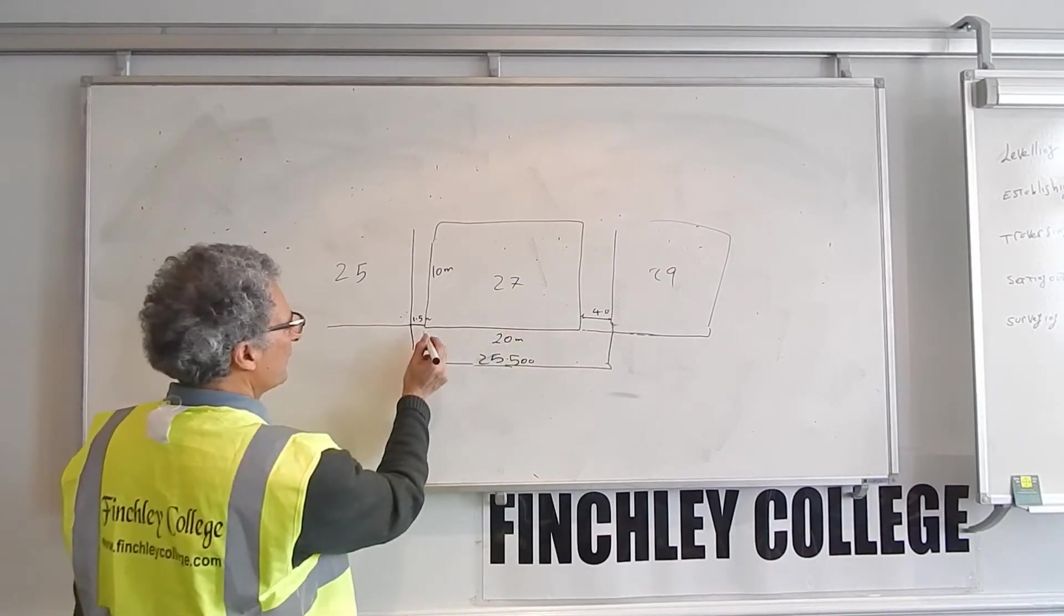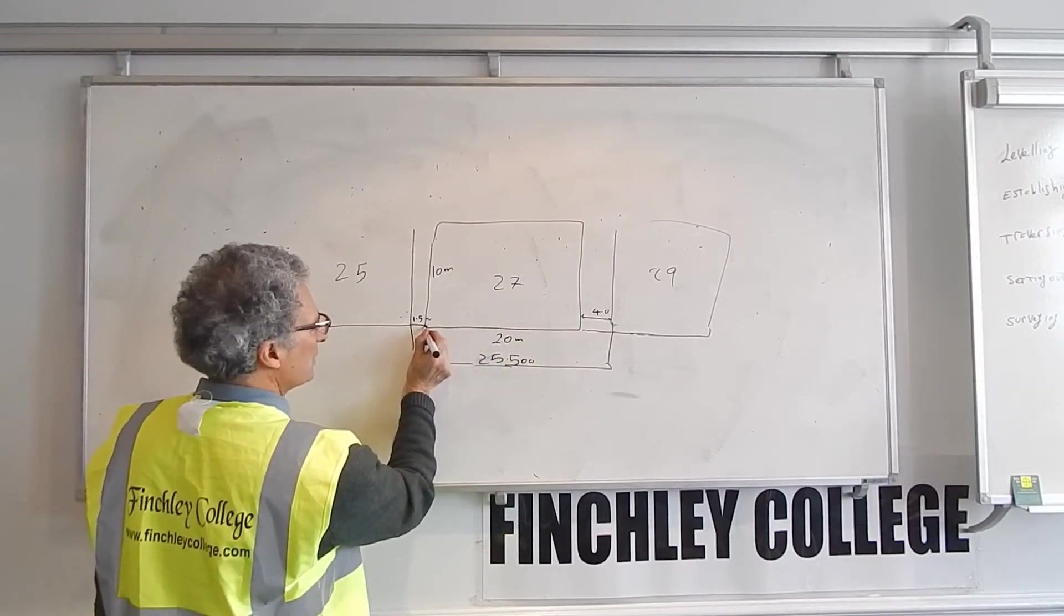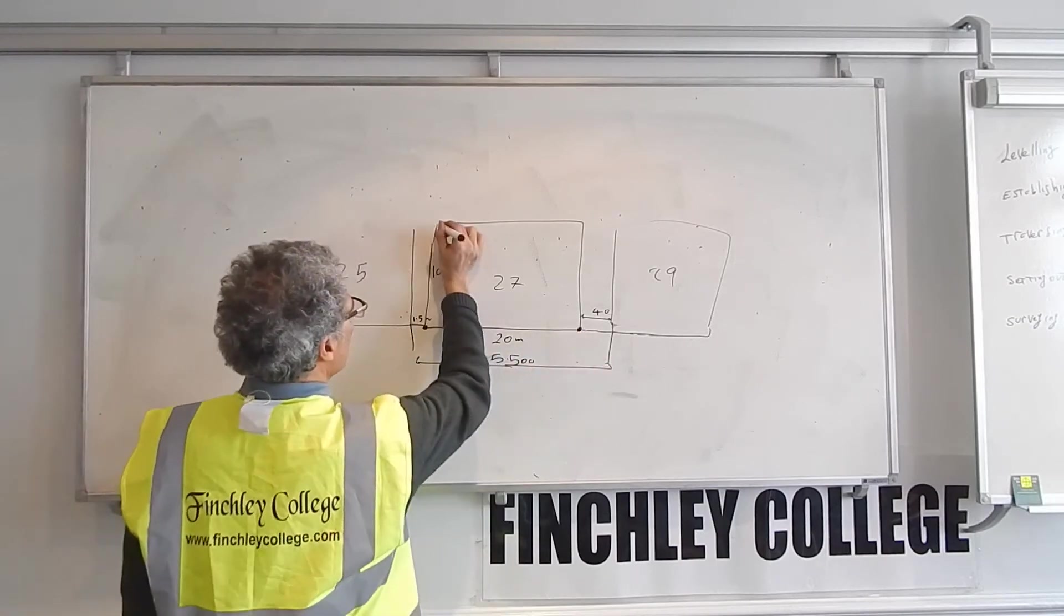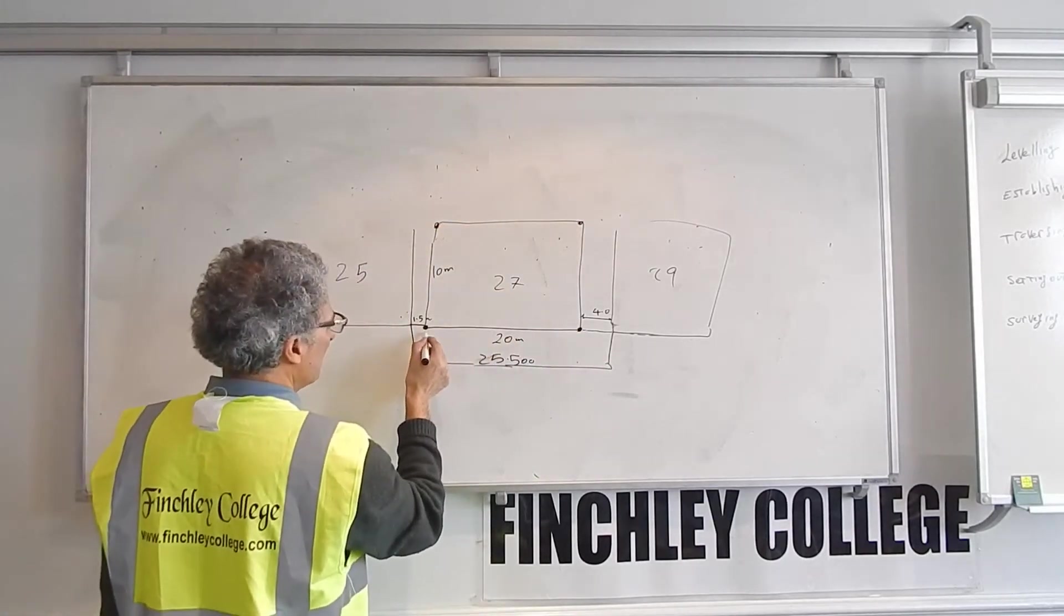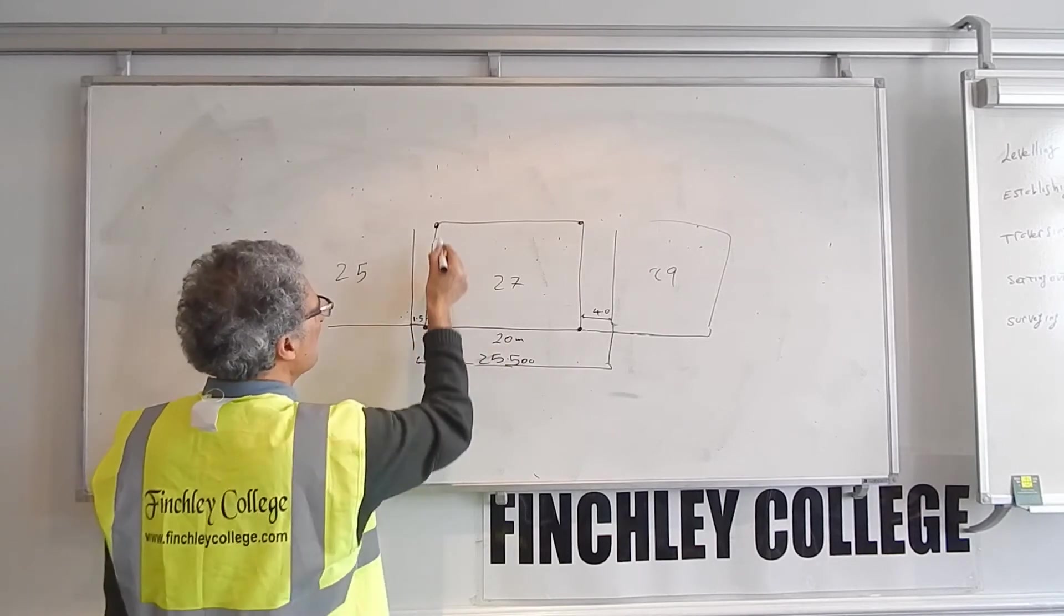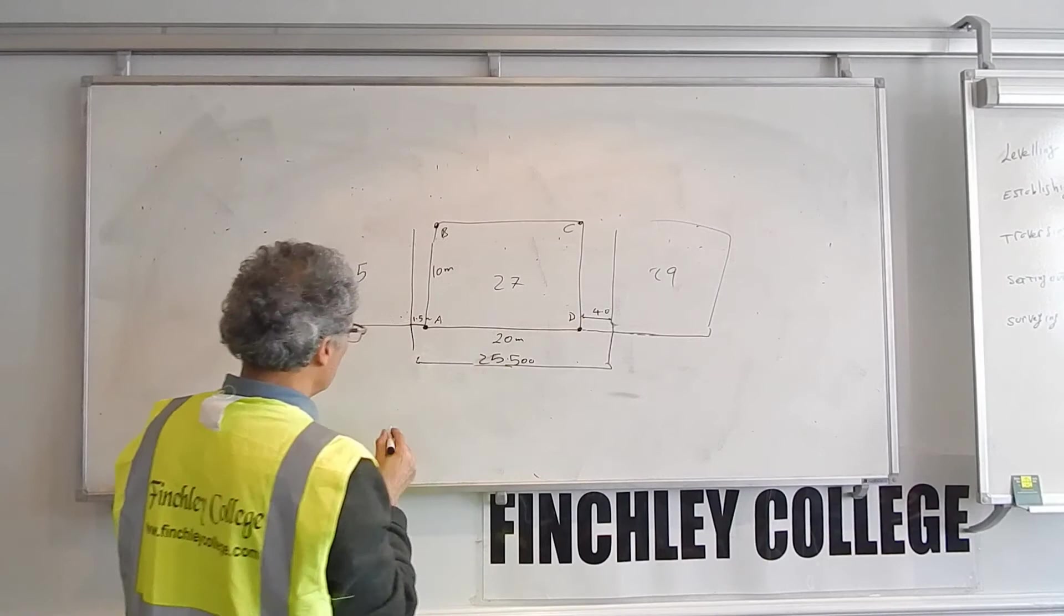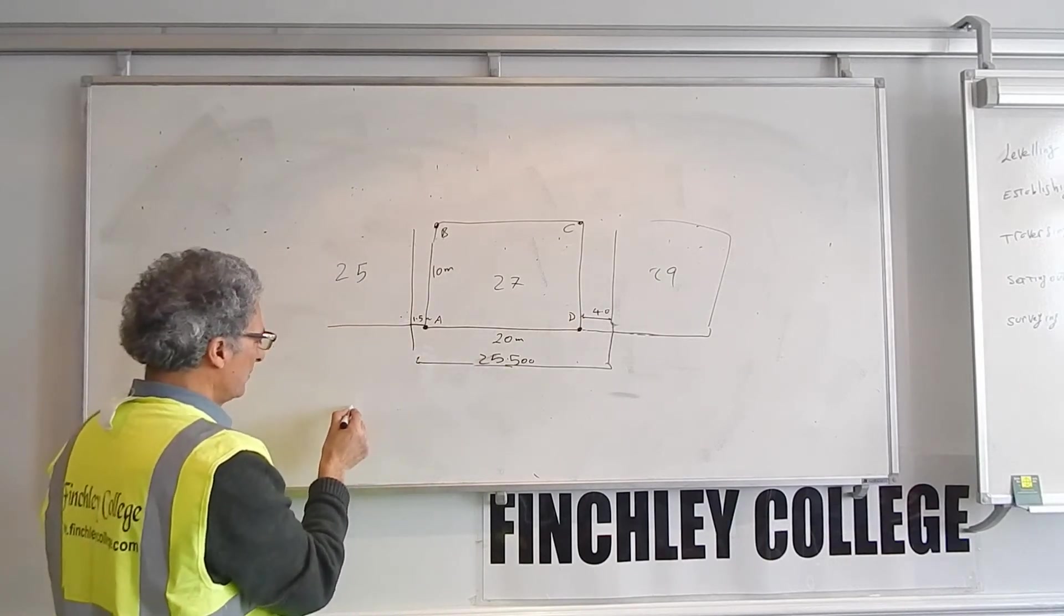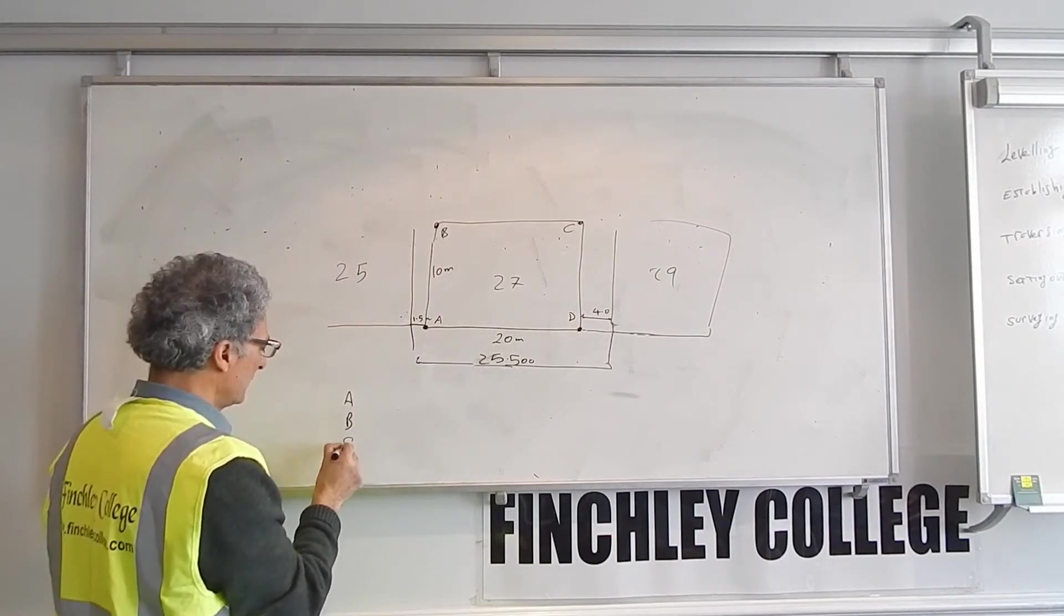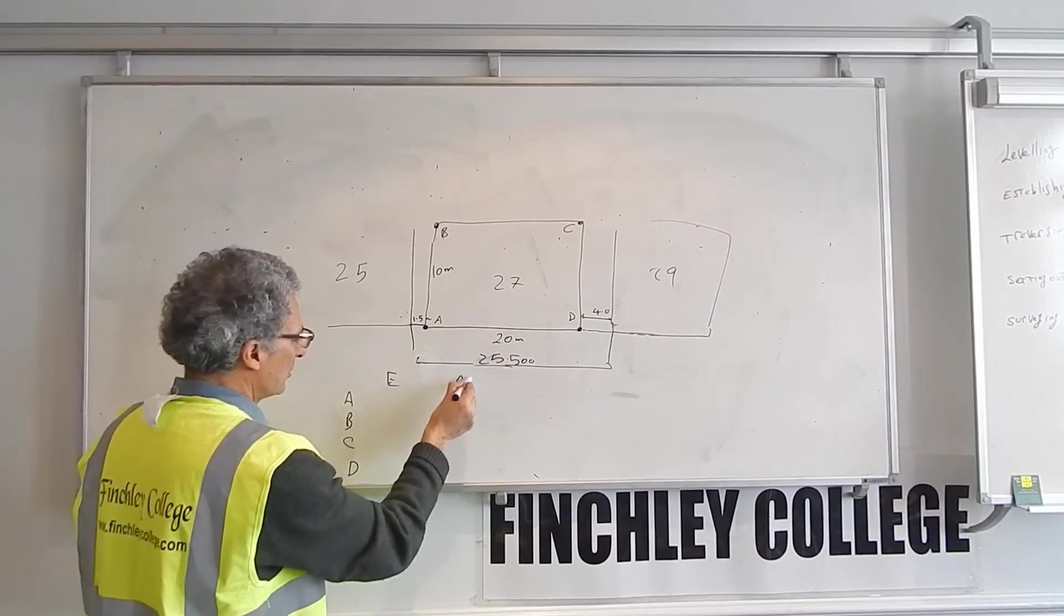Now what you do, the first thing you do, you establish a coordinate system for your own building. So for this one, let's say I call it point A, point B, point C, and point D. So I establish a coordinate system, point A, B, C, and D, easting and northing.